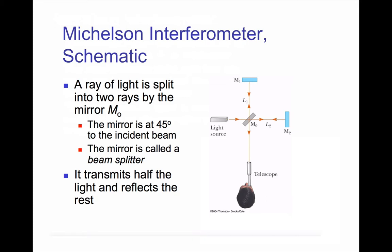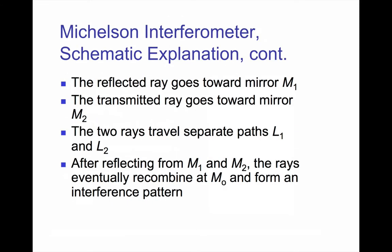The ray leaving the source on the left that passes straight through the 45 degree beam splitter, travels to mirror 2 and bounces back. Half of it is then reflected off the beam splitter and also reaches the telescope. The two rays have followed different paths, and are now recombined at M0 and form an interference pattern.